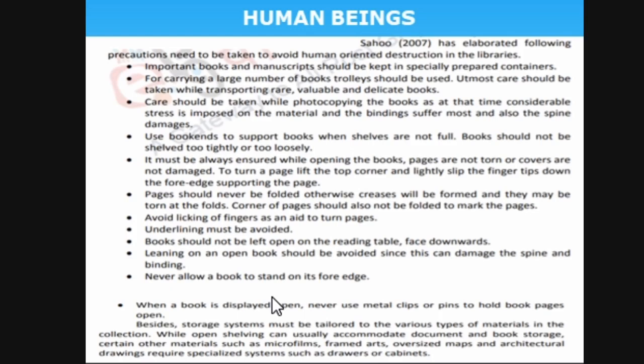These are the precautions we can take. Important books and manuscripts should be kept in a separate section. If there is only one copy of an important book like an East India report, you cannot keep it in the general section. Keep it in a separate section — only authorized users are allowed and it should be handled with the help of library staff only. For carrying large numbers of books, a trolley should be used to avoid accidental damage.